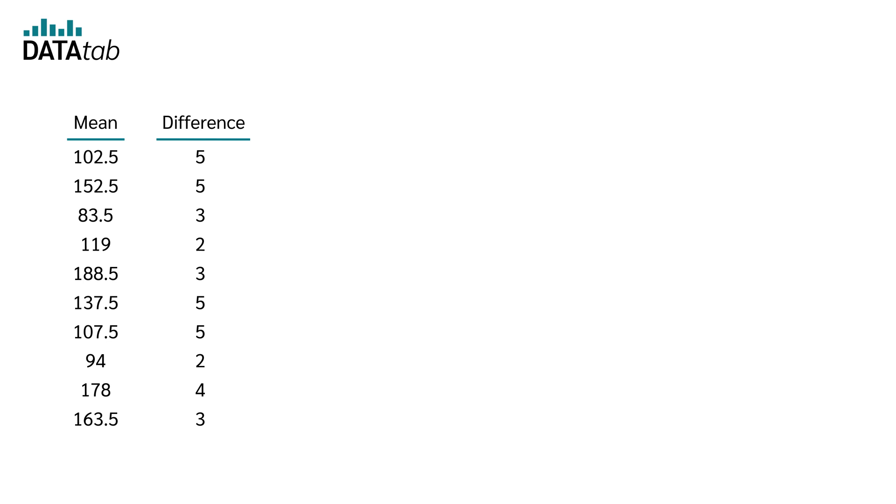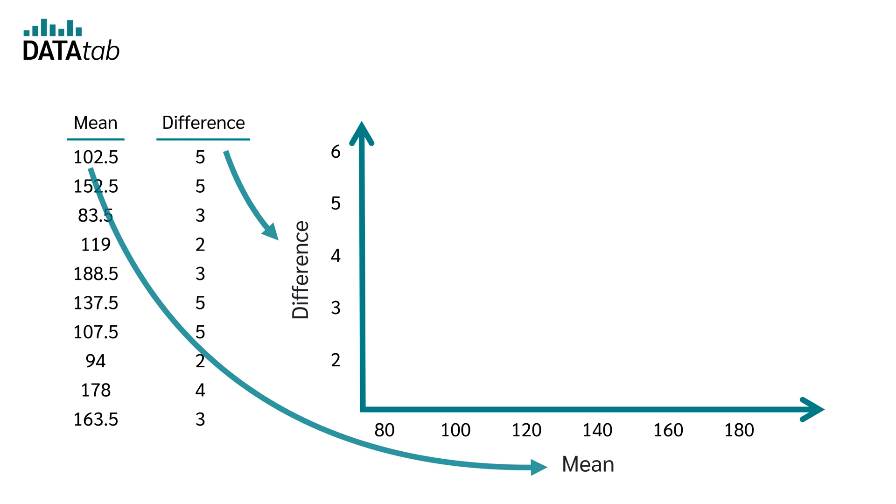With these two values, we can now start drawing the Bland-Altman plot. So let's just draw an x and a y-axis. On the y-axis we plot the difference between the two values, and on the x-axis we plot the mean value of each pair.